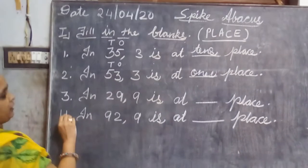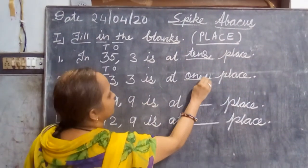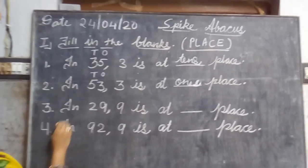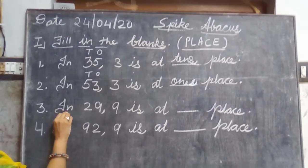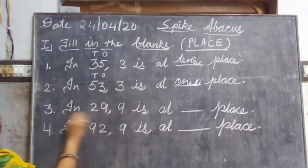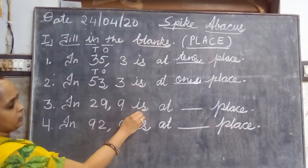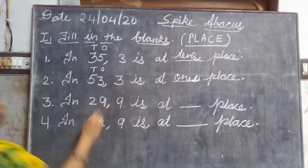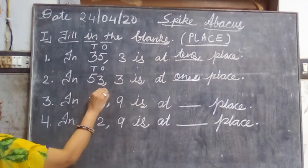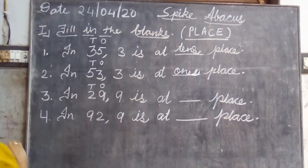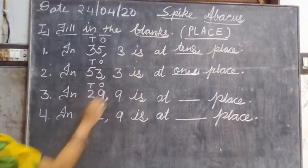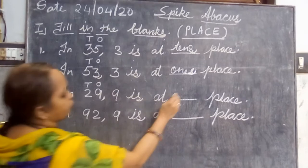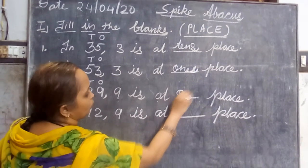Now in the next, third question, again see the same type of example and read with me. In twenty-nine, nine is at dash place. Now let us check. Write here first ones and tens. Okay? Now tell me where is the nine? Below ones. So we will write: the place of nine is ones.